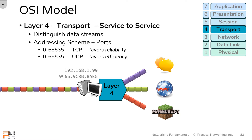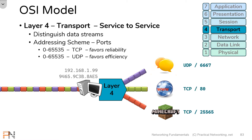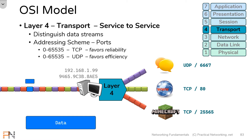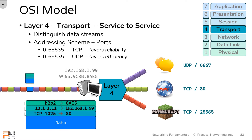Every single program that's expected to receive or send data on the wire is going to be associated with a particular port number. When data arrives on the wire, it's going to include a Layer 4 header in addition to the Layer 3 and Layer 2 headers we've already discussed. That Layer 4 header will indicate which particular program should be receiving that data, and that's what Layer 4 is going to use to make sure the right program receives the right ones and zeros.